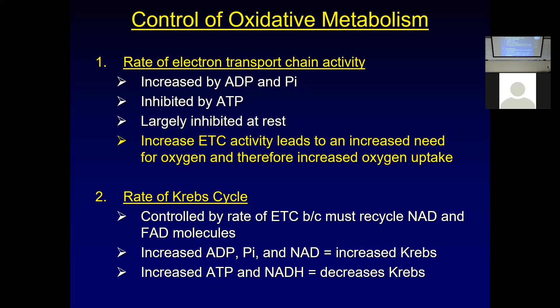The Krebs cycle has a rate control enzyme, but it's also primarily controlled by the rate of the electron transport chain because in order for the Krebs cycle to proceed, we need to recycle electron carriers NAD and FAD. They have to donate their electrons into the ETC. When ETC speed goes up, it recycles NAD and FAD faster, returning them to the Krebs cycle faster, allowing more pyruvate through.